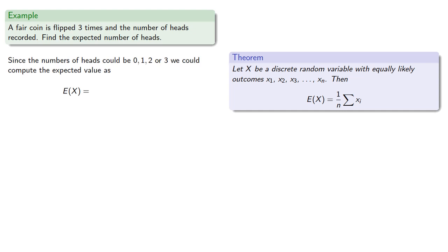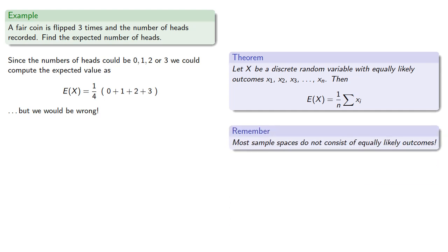we could compute the expected value as the sum of the outcomes. And since there are four outcomes, we'd multiply this by one-fourth. While we could do this, we would be wrong. Because remember, most sample spaces do not consist of equally likely outcomes.